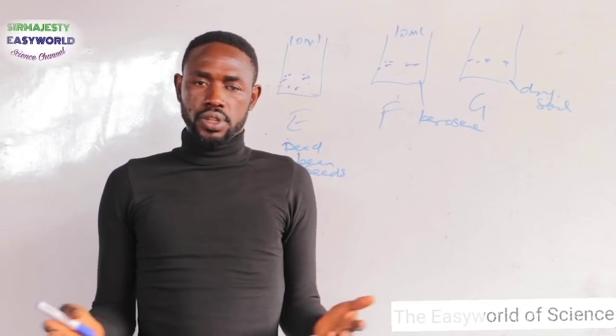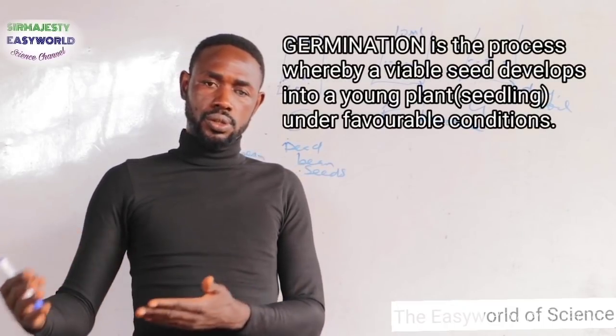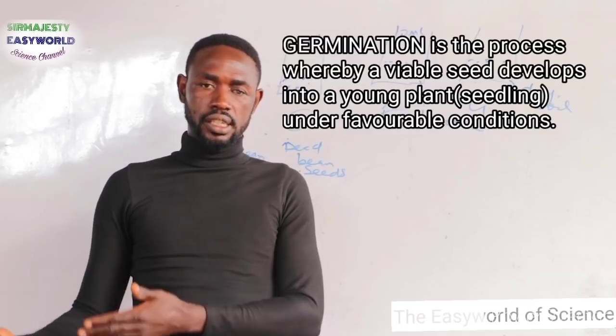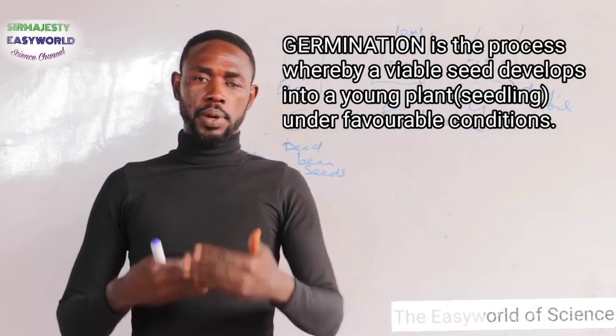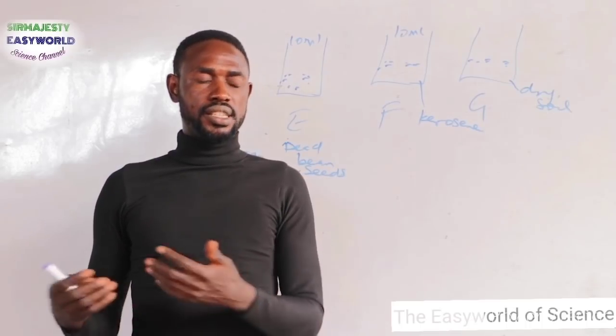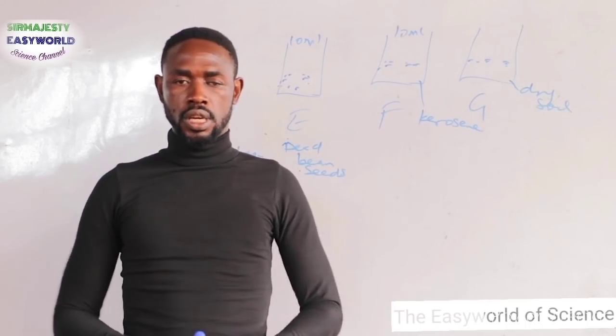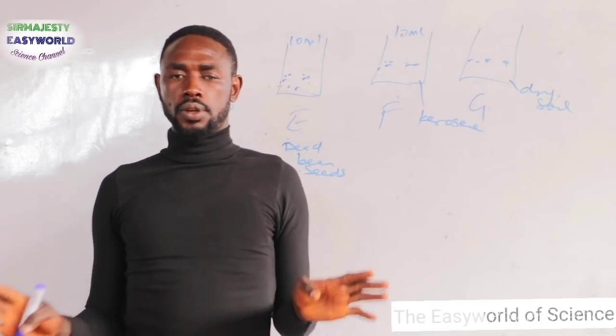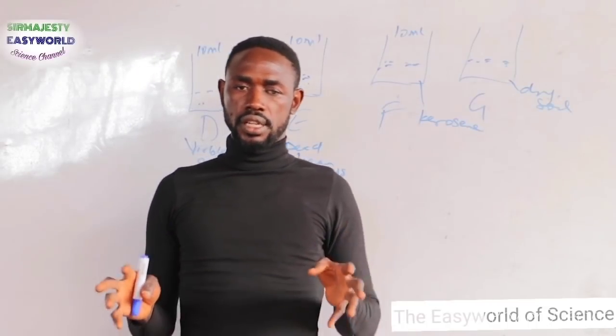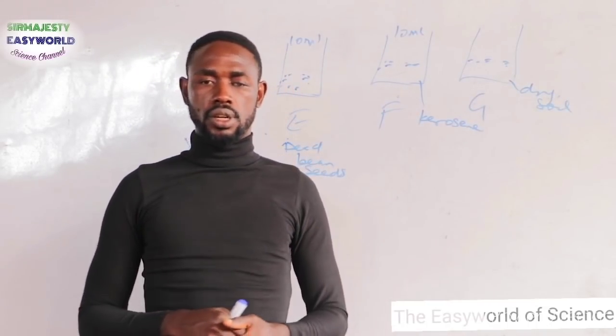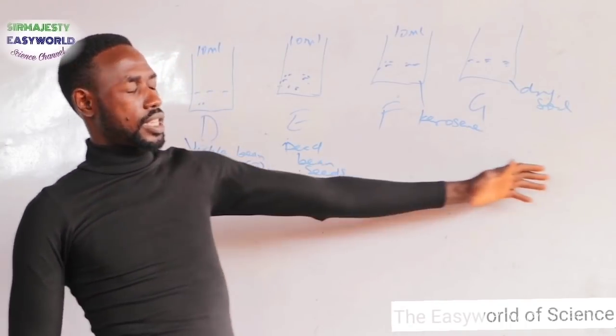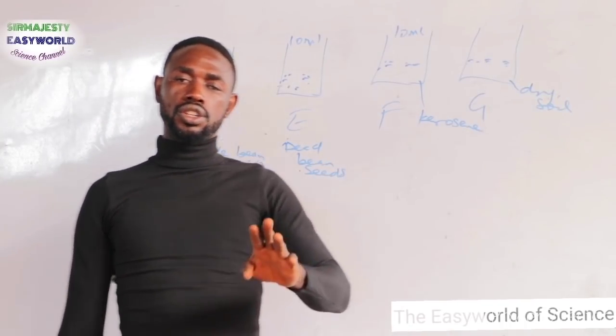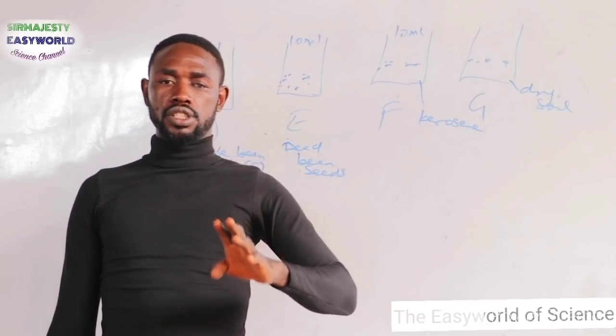Germination is actually a process whereby a seed develops into a plant or a seedling under necessary conditions. The process whereby a young plant forms or is developed from a seed is what we call germination. There are two types of germination: epigeal germination and hypogeal germination.